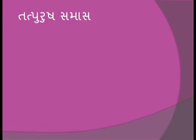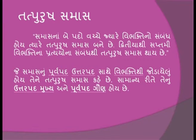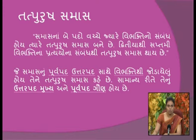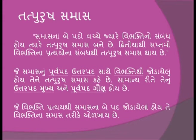તત્પુરુષ સમાસ: જે સમાસના બે પદો વચ્ચે જ્યારે વિભક્તિનો સંબંધ હોય ત્યારે તત્પુરુષ સમાસ થાય છે. જે સમાસનું પૂર્વ પદ 'પુત્ર' સાથે વિભક્તિથી જોળાયેલું હોય, તેને તત્પુરુષ સમાસ કહે છે. સામાન્ય રીતે ઉત્તર પદ મુખ્ય અને પૂર્વ પદ ગૌણ હોય. જે વિભક્તિ પ્રત્યયો થી સમાસના બે પદ જોડાયેલા હોય, તે વિભક્તિ ના સમાસ તરીકે ઓળખાય છે.